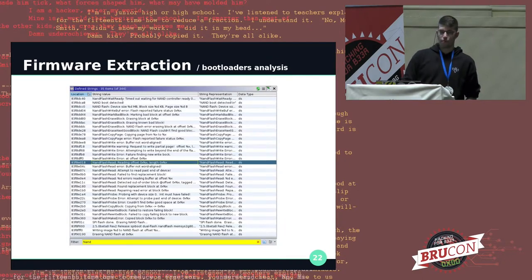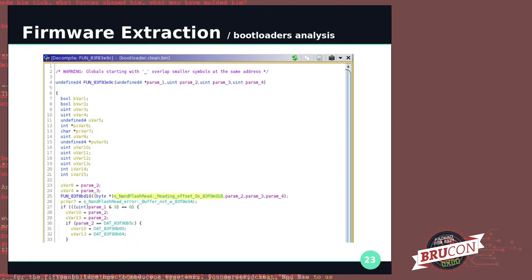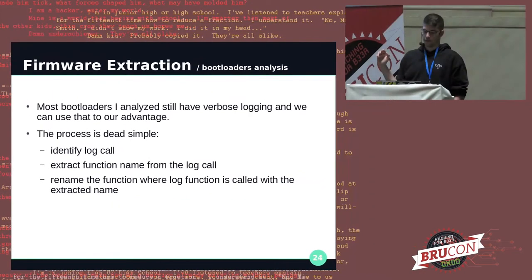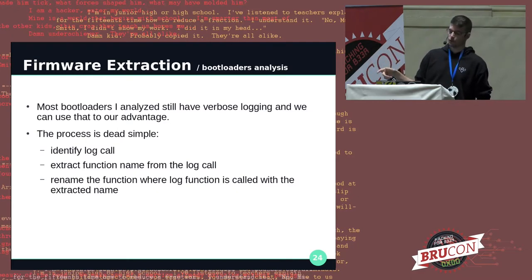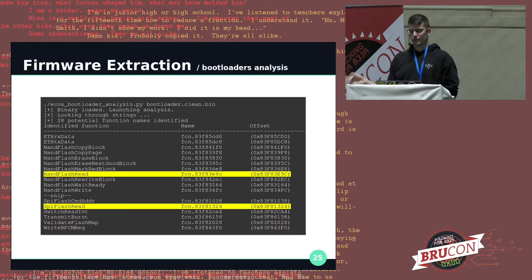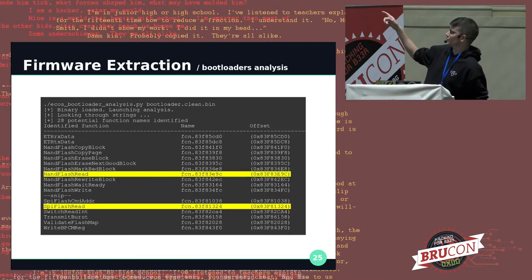The cool thing is that Broadcom bootloaders leave lots of logs and debug strings in the final binary, and we can use them to identify functions. For example, a function is unnamed because there are no symbols, but there's a log line 'NAND flash read: ...' — and 'nand_flash_read' is actually the function name. We can write a script to identify log calls, extract the function name from the log string, and rename the function from where it's called. I did this with Radare2 and r2pipe, which lets us pinpoint functions like nand_flash_read and SPI_flash_read.